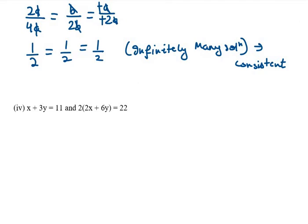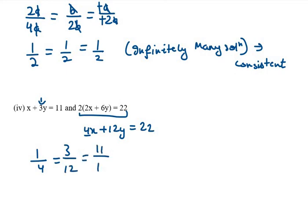Now the fourth one. The fourth one is x + 3y = 11, and the second equation needs to be expanded first, so it is 4x + 12y = 22. Here we are given a1 as 1 and a2 as 4, b1 as 3 and b2 as 12. Now c1 is 11 and c2 is 22.